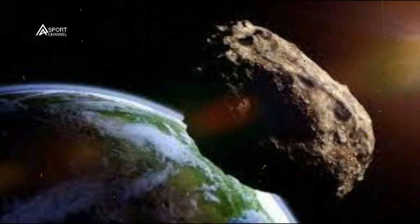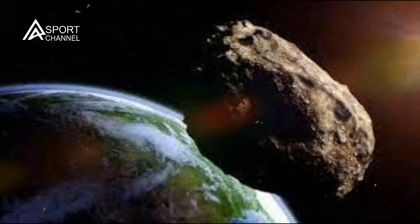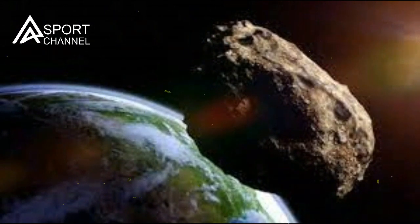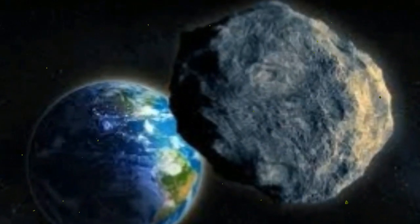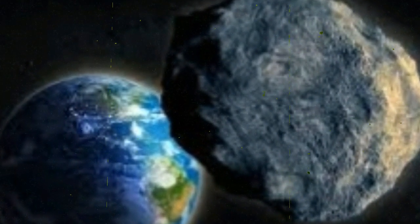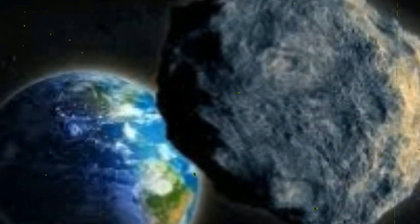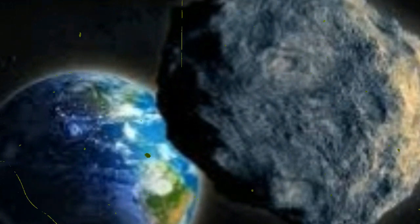Scientists were unaware of the object, dubbed Asteroid 2021 UA1, because it approached Earth's daytime side from the direction of the Sun, so the comparatively dim and small visitor went undetected until about four hours after passing by at its closest point, according to CNET.